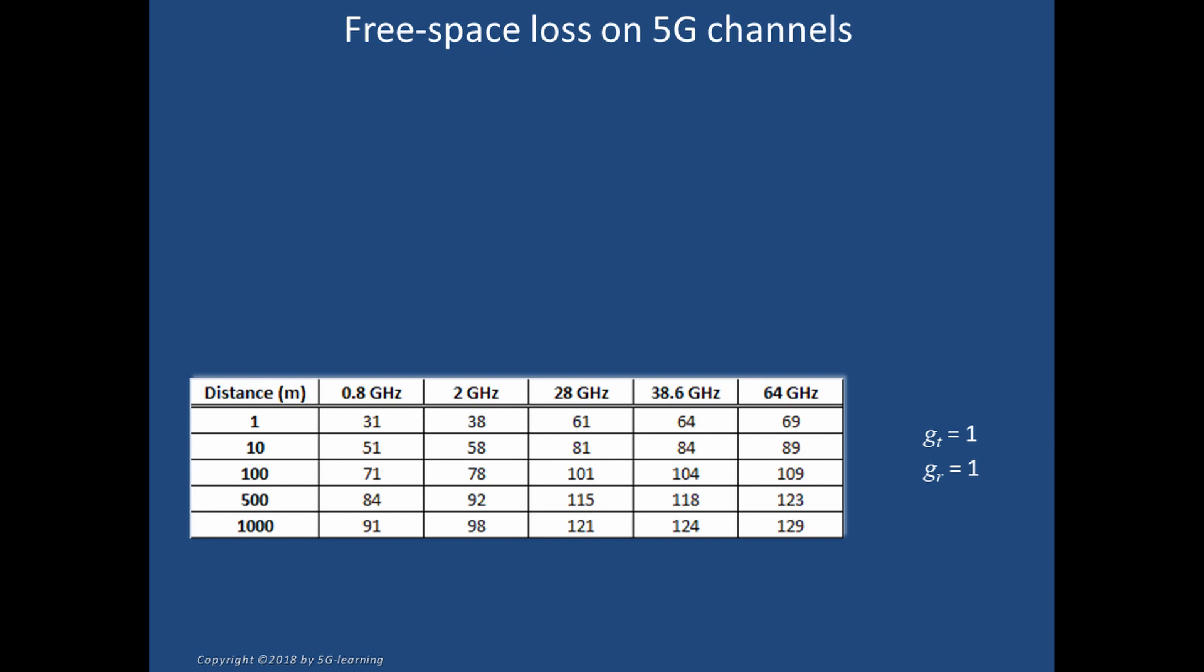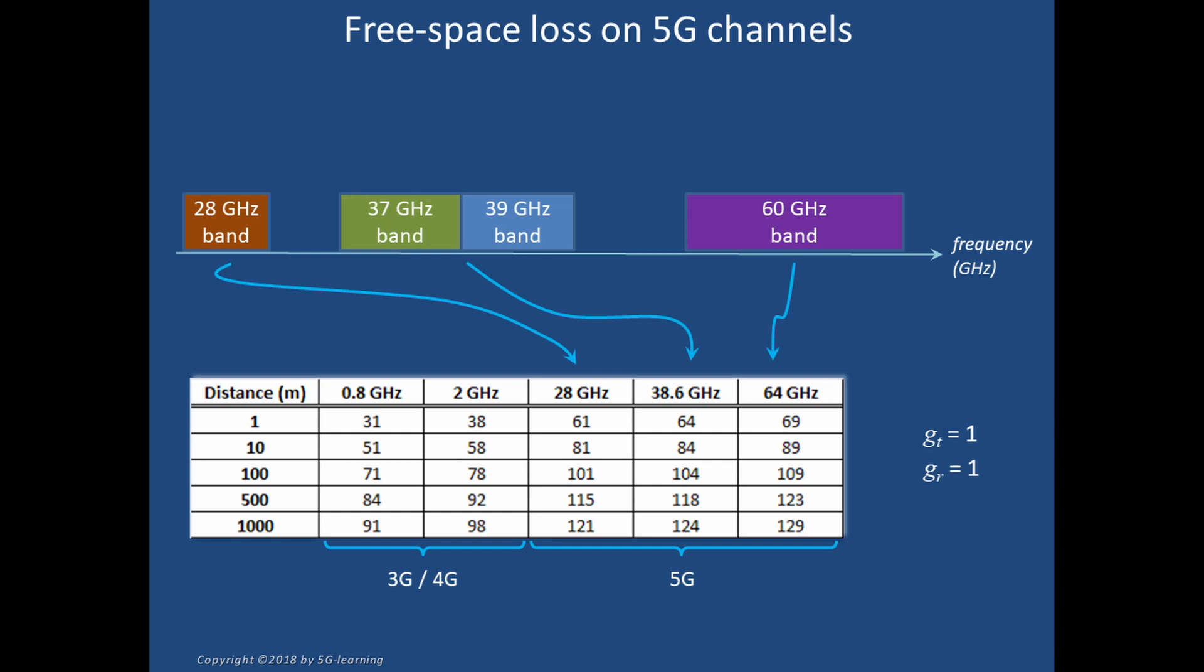In this table, the rows show the attenuation at distances from the base between one meter and one kilometer. Columns two and three correspond to typical frequencies currently used in 3G and 4G cellular networks. The remaining columns refer to frequencies allocated by the FCC for 5G or for license-free wireless local area networks.